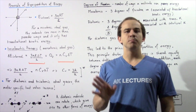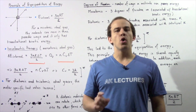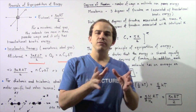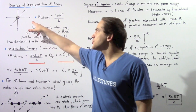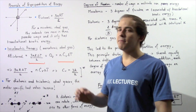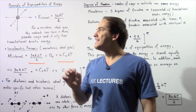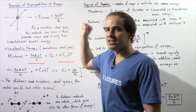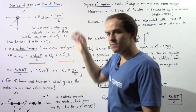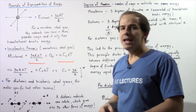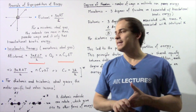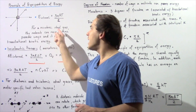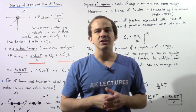A monatomic molecule is simply a molecule composed of a single atom, as shown in the following diagram. We know from previous results that the internal energy of a monatomic ideal gas system is given by the equation: (3/2) × n × R × T, where n is the number of moles, R is the universal gas constant, and T is the temperature in Kelvins.